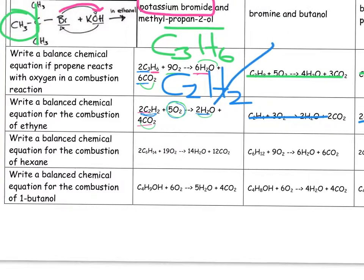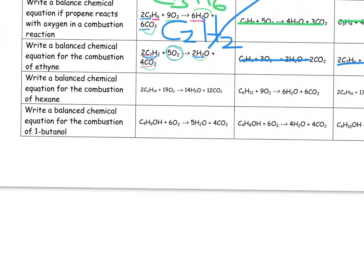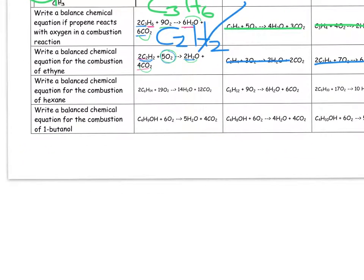Then let's take a look at the next one. Write a balanced chemical equation for the combustion of hexane. Hexane is going to be C6H2N, so it's 12, plus 2, so it's 14, which means that we eliminate those two over there.